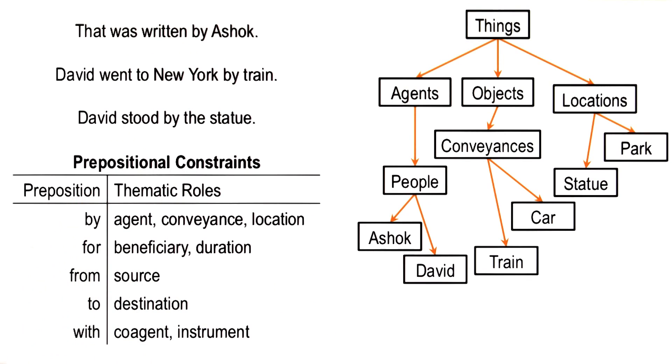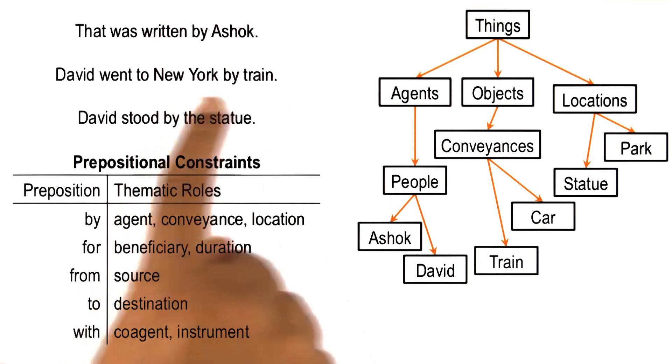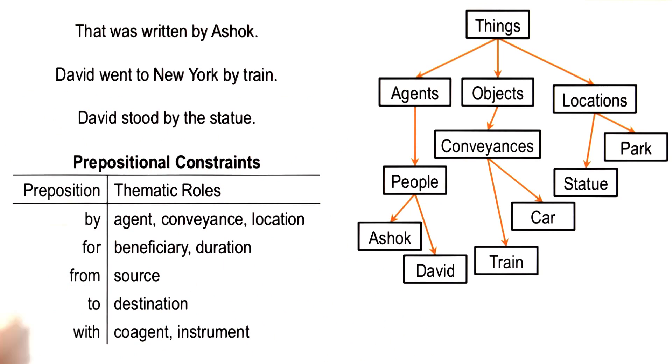There is another important thing to note here. Initially, when we were given this sentence, David went to New York by train, we started doing bottom-up processing. David was a noun, went was a verb. But pretty soon, we shifted to top-down processing. As an example, we already have this background knowledge. And this background knowledge tells us, in a top-down manner,